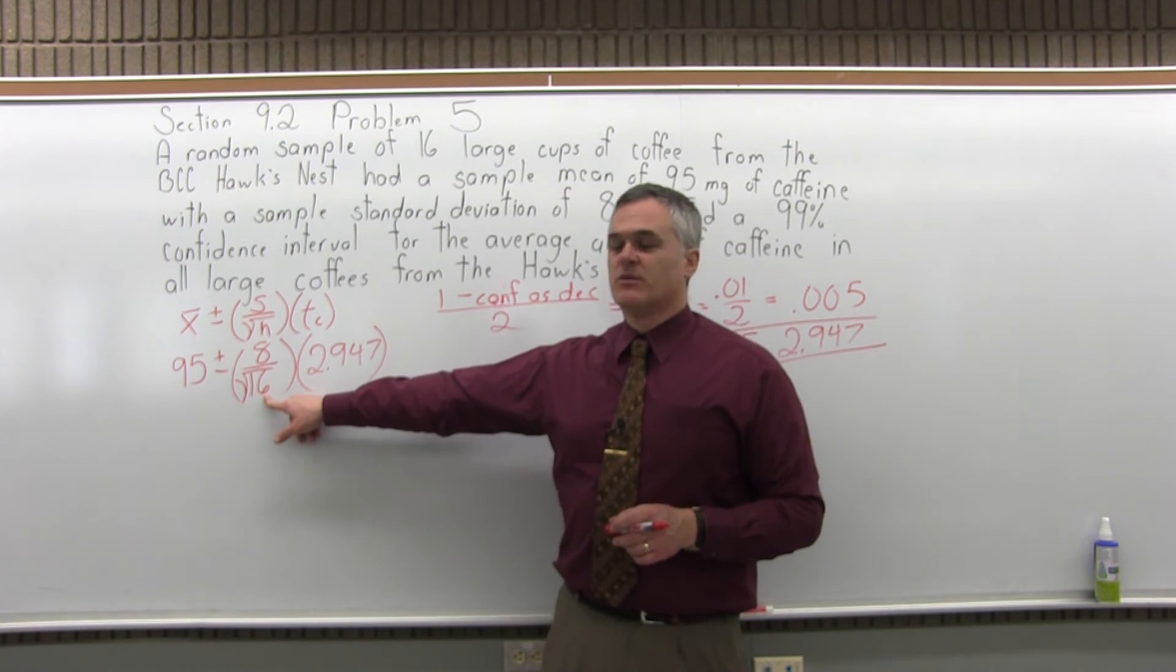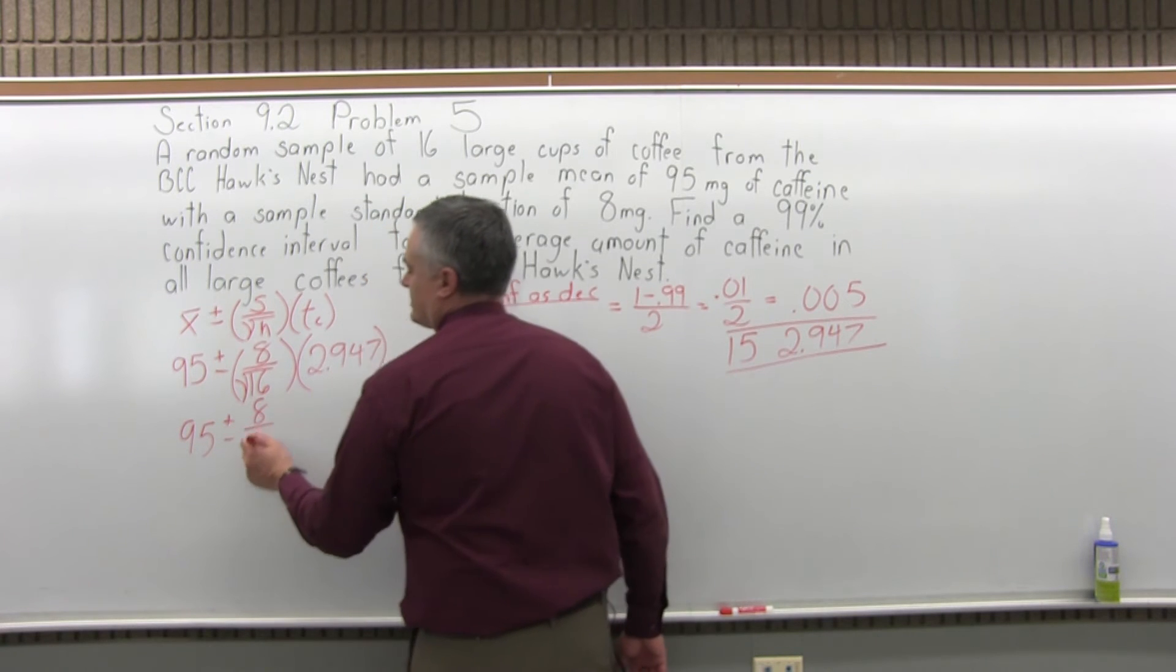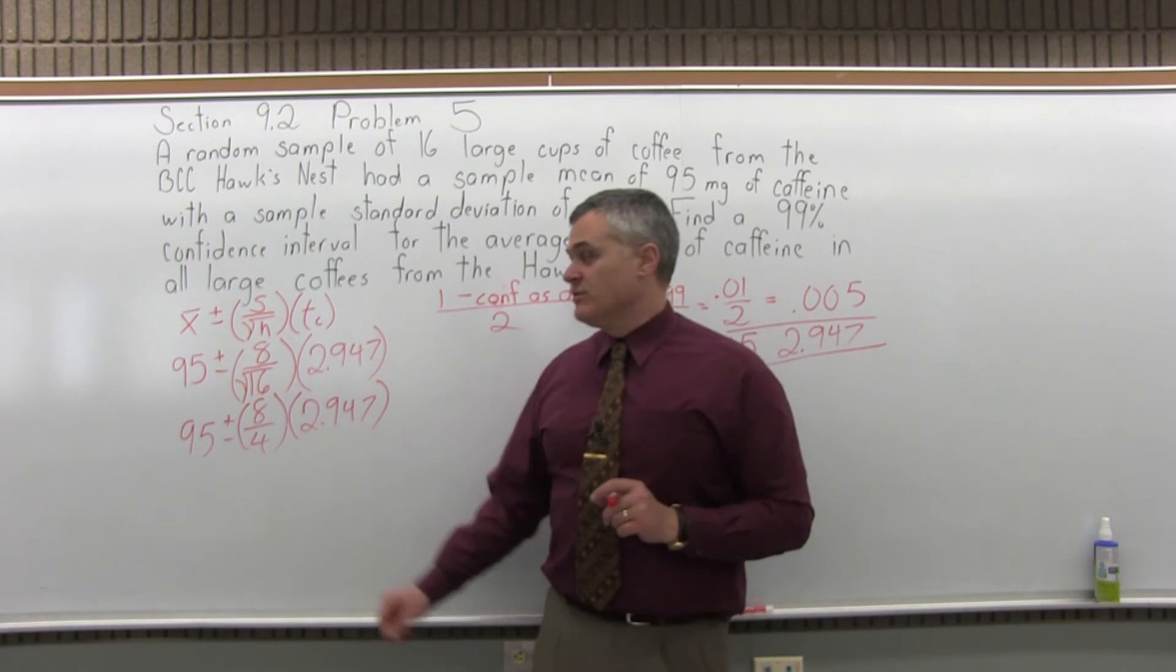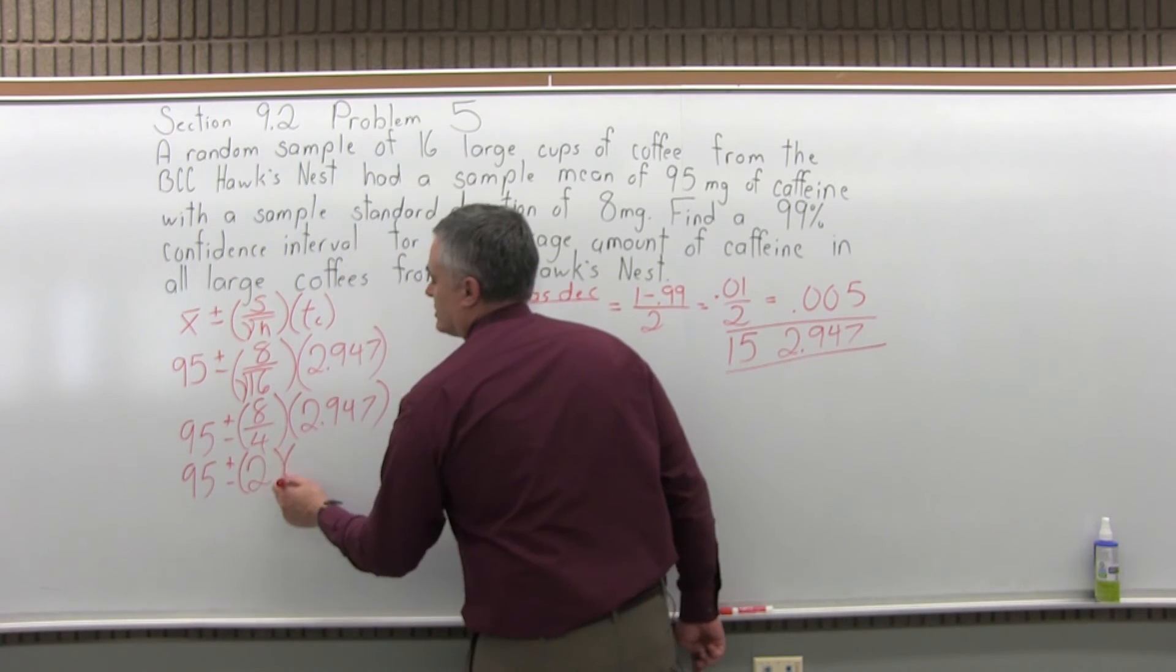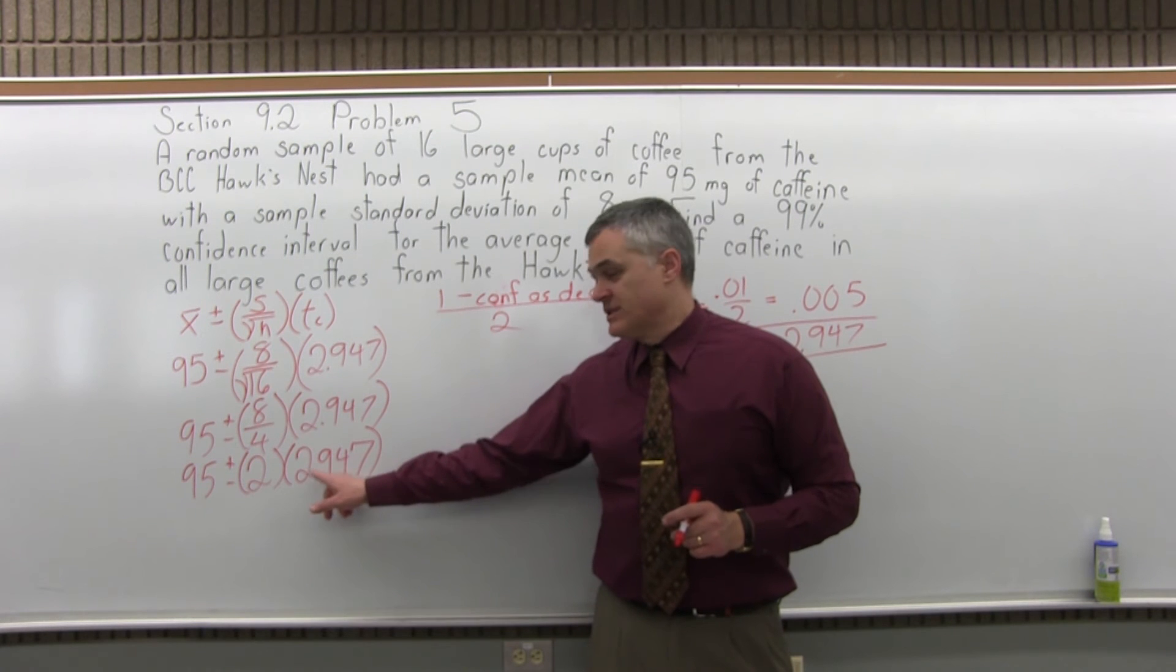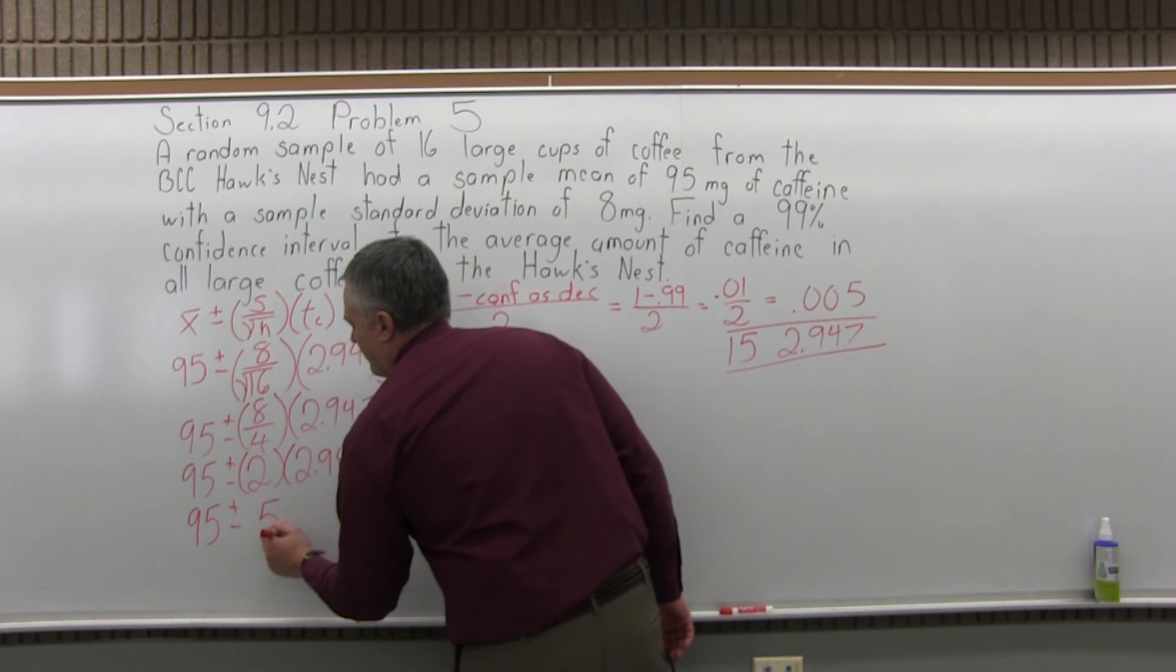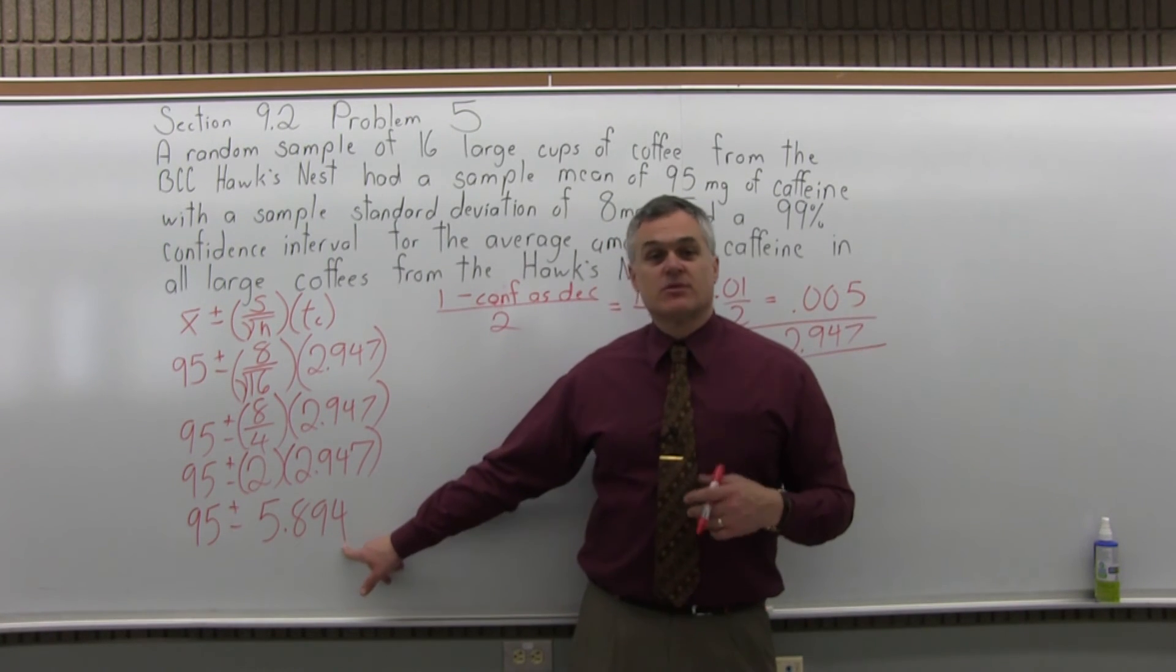So now that we have it filled in, first problem we have to deal with is the square root. Get rid of the square root first. This is an easy square root to take. So I have 95 plus or minus 8 over 4 because the square root of 16 is 4. The next thing that I can do is reduce the 8 over 4. That reduces nicely to 2. So it becomes 95 plus or minus 2 times 2.947. Now I can multiply the 2.947 times 2 and get one number after the plus and minus. It'll be 95 plus or minus 5.894.